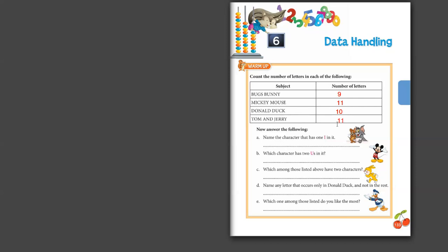So now we have gathered information on the names of these cartoon characters. They have given us questions based on the data we gathered. The first question asks: name the character that has 1 'I' in it. Bugs Bunny has no I, Mickey Mouse has 1 I in Mickey and none in Mouse, Donald Duck has no I, and Tom and Jerry has no I.